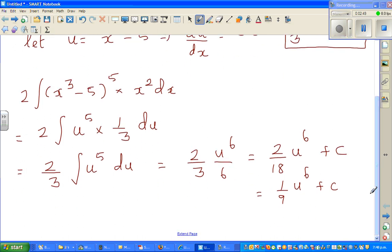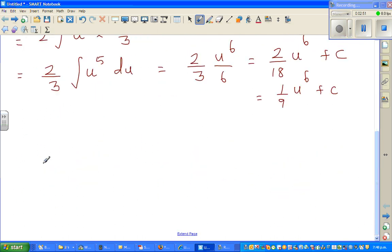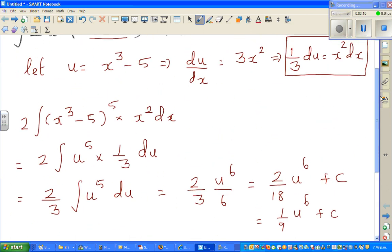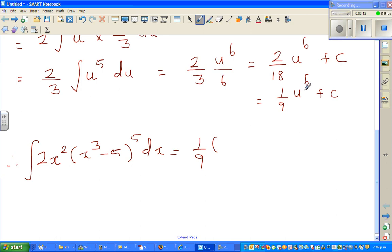But we want to write in terms of x. So therefore, you can say integration of 2x squared times (x cubed minus 5) to the power 5 dx is 1/9th times, that was our u. So u was x cubed minus 5. So in place of u I can put (x cubed minus 5) to the power 6 plus C. So this is fine.